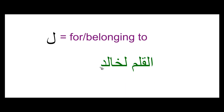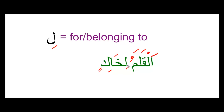The first one is laam or li, and it means 'for' or 'belonging to.' For example, al-qalamu li-khalidin. The default ending on qalam is dhamma, but because this laam — this harf al-jar — has come, I have to add two kasras at the end of khalid. So it becomes al-qalamu li-khalidin: the pen is for Khalid, or the pen belongs to Khalid. It is very similar to mudaf mudaf ilay, but there is a difference as you can see.